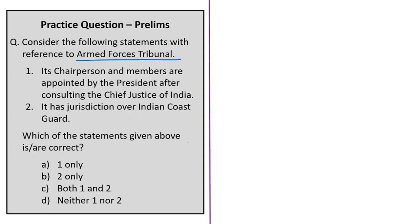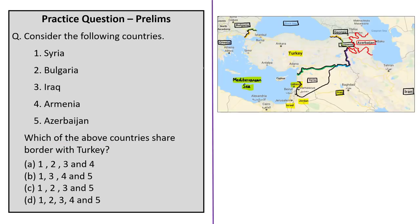The tenth question is about the Armed Forces Tribunal. Statement one says its chairperson and members are appointed by the President after consulting the Chief Justice of India — this is correct per the Armed Forces Tribunal Act of 2007. Statement two says it has jurisdiction over the Indian Coast Guard — this is incorrect, as its jurisdiction covers persons under the Army Act, Navy Act, and Air Force Act only; Coast Guard is not included. The correct answer is option A: one only.